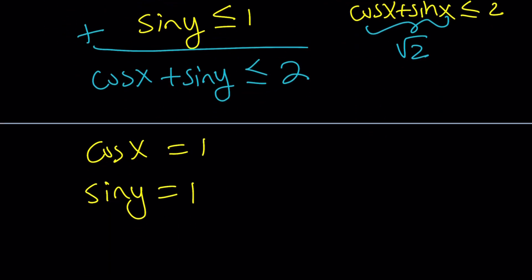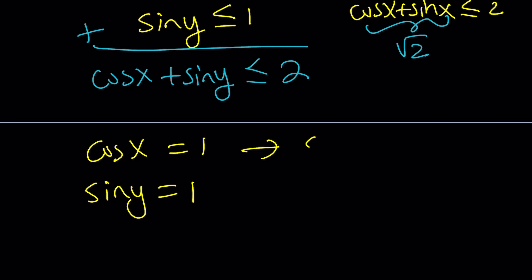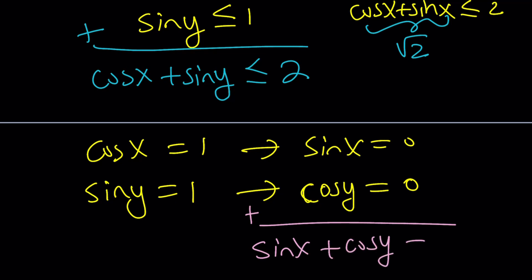You know what that implies from Pythagorean theorem? If cosine x is 1, then sine x is 0. And if sine y is 1, then cosine of y is 0. Right? Because, come on, it's common sense, right? And then since we're looking for sine x plus cosine y, that will be 0 as well as before. And that brings us to the end of this video.